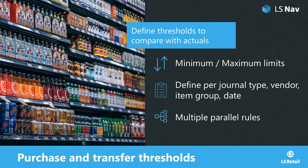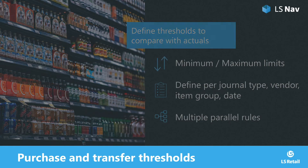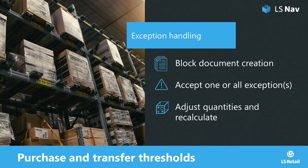If a journal violates a threshold rule, an exception is raised. You can set up the system so that exceptions are just warnings, but you can also block the creation of transfer and purchase documents. If that's the case, you need to accept the exceptions to be able to create the documents, or you adjust the quantity to fulfill the business rules.